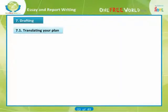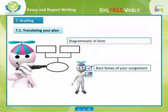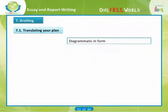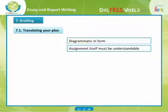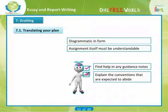Your plan only needs to make sense to you. It may be diagrammatic in form, using circles, arrows, and abbreviations — it is the bare bones of your assignment, and it is also disposable and changeable. The assignment itself must be understandable to anyone who is marking it, as certain expectations need to be met. You will find help in any guidance notes you have been given for your course. Reading these is just as important as interpreting the assignment title, as they will explain the conventions you are expected to abide by in shaping your piece of writing.